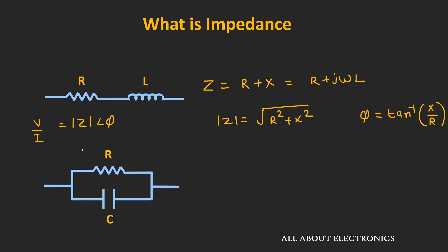Similar to resistance, this impedance is also a ratio of voltage and current. For any particular network or circuit, if impedance is represented in this way, it means the voltage will lead the current by some phase angle φ, and the ratio of the voltage and current signal will give the magnitude of the impedance. Similarly, for any given circuit, we can find the impedance. For example, for this particular circuit, the impedance will be equal to the parallel combination of R and the capacitive reactance XC.